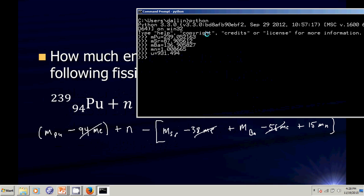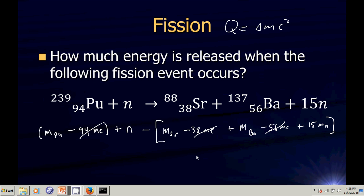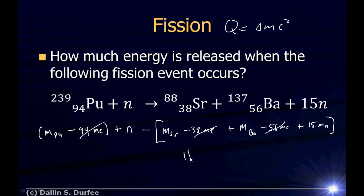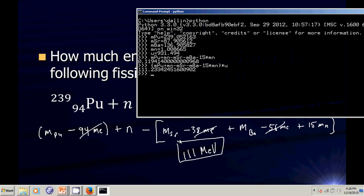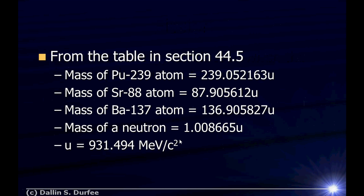My equation is the mass of plutonium atom plus the mass of a neutron minus the mass of strontium minus the mass of barium atom minus 15 times the mass of a neutron. There's how much the atomic mass changes by. I need to multiply all of that by U in MeV over C squared, multiply by C squared, and there's the energy released in MeV. So 111 MeV.